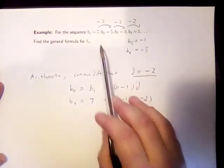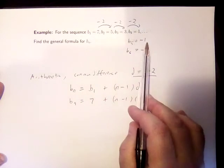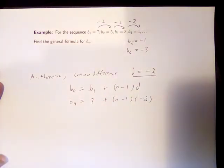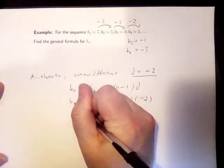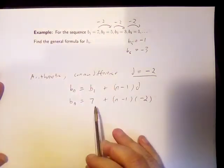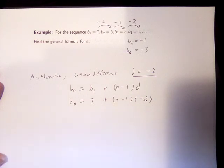In fact, I can check that it generates all of the terms in the sequence, the ones that were given as well as my predictions. So my general formula for this sequence is 7 plus n minus 1 times negative 2.